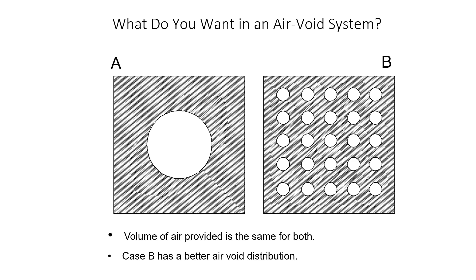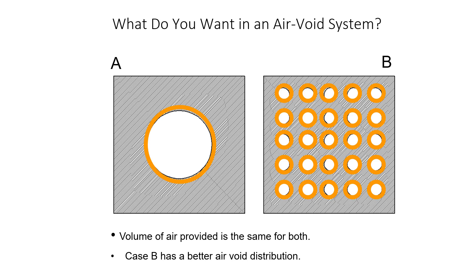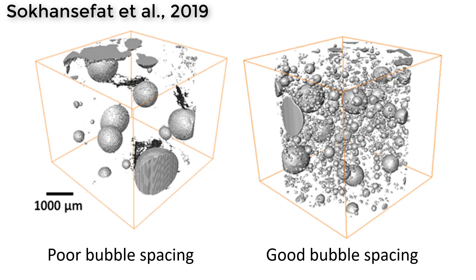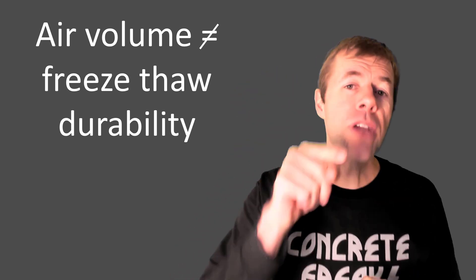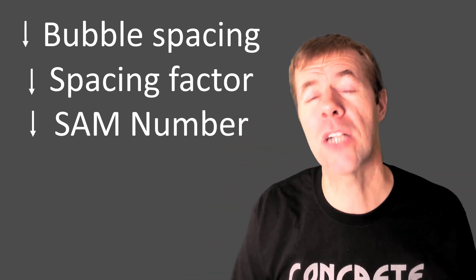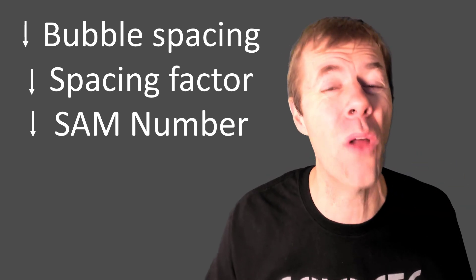This is why when you see pictures comparing air void systems — the one on the left versus the one on the right — each one of these voids protects a certain volume around it. We would much rather have small, well-distributed bubbles throughout our concrete. The air void spacing is critical to freeze-thaw durability. CT scans show that a poor air void system on the left and a good air void spacing on the right can have about the same volume of air, but the spacing of the bubbles is very different. Air volume does not equal freeze-thaw durability. It's much more about bubble spacing — you want a low spacing factor and a low SAM number. I've got videos about all of this.